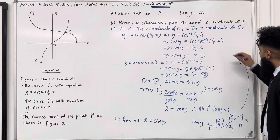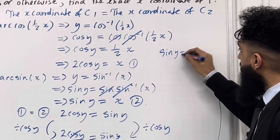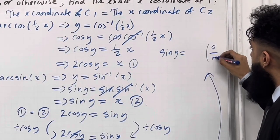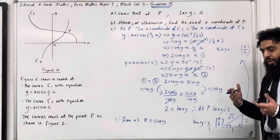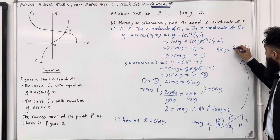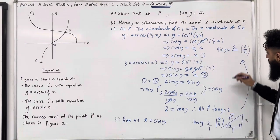So from this triangle, we can see that sin y is given by opposite over hypotenuse. So the opposite is 2 over the hypotenuse, which is √5.